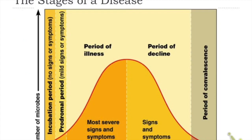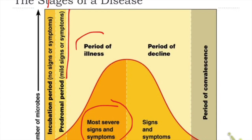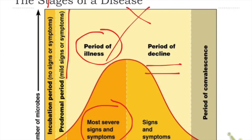If you have a disease, it goes through five stages. Stage one is the incubation period — no signs or symptoms, it is the interval between the first entry of the organism and the appearance of the first signs and symptoms (e.g., two weeks for gonorrhea, several days for the common cold). Then the prodromal period, where mild signs and symptoms appear. The period of illness shows the most severe symptoms. Then the period of decline, where symptoms become less severe, followed by the period of convalescence — recovery.